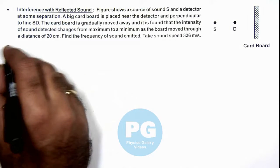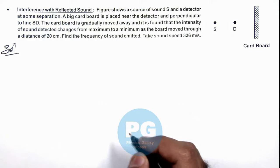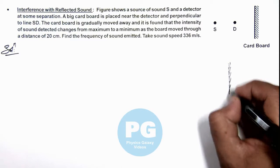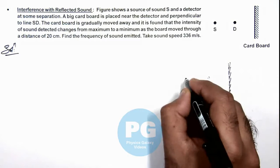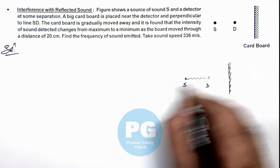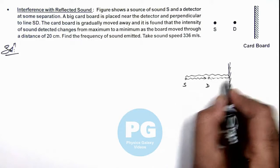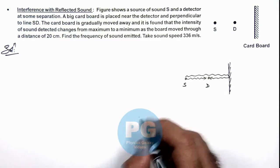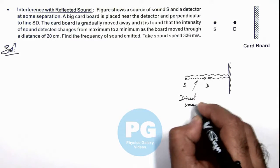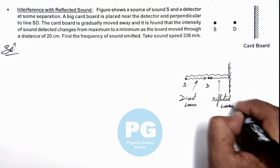So here, we can first analyze how the detector will be detecting maximum and minimum sounds. We can see if this is the cardboard, and here a detector is there and a source is placed, the detector is receiving one wave directly from source and another wave which is reflected from cardboard. So this is the direct wave and this is the reflected wave which the detector is receiving.